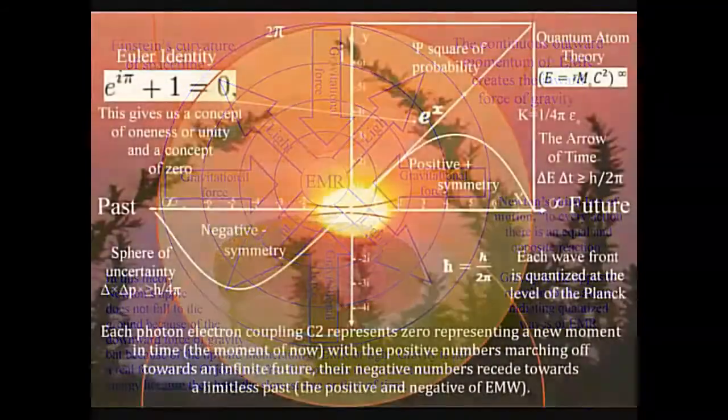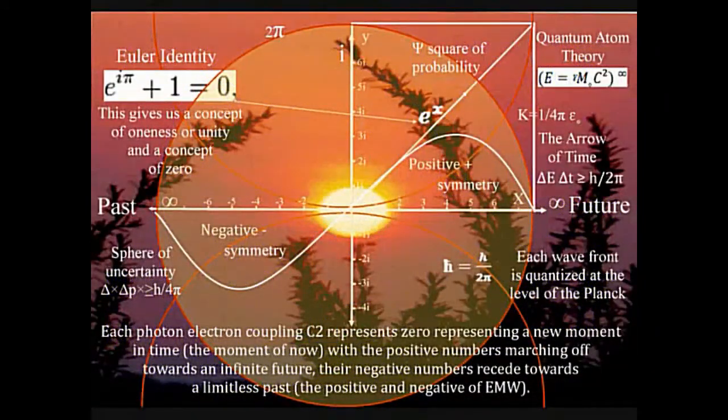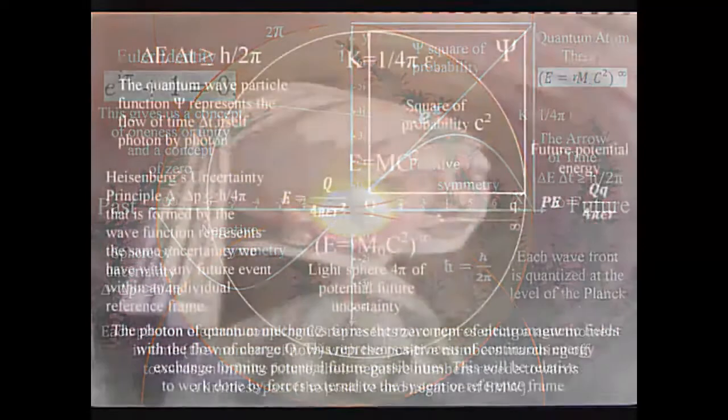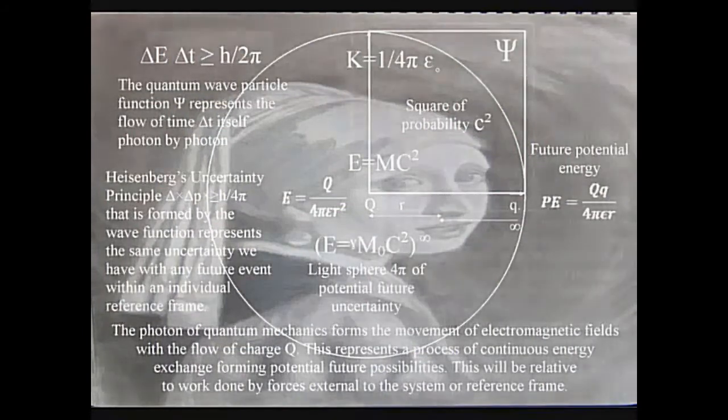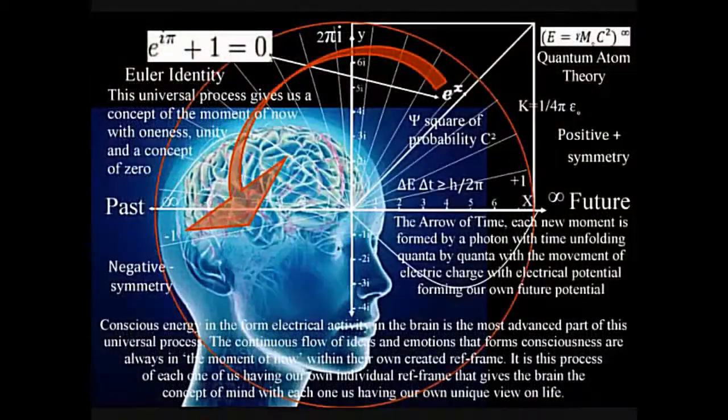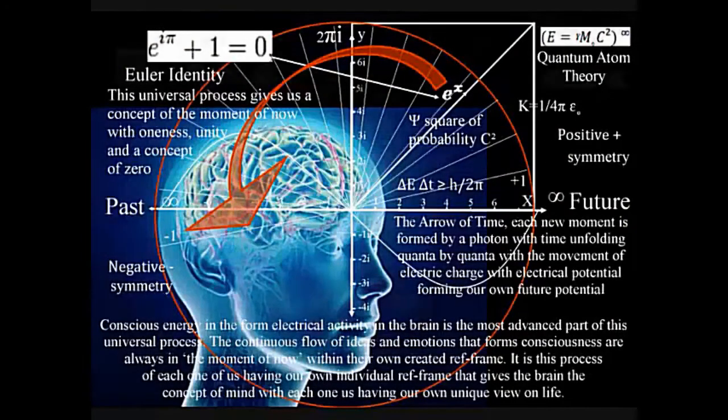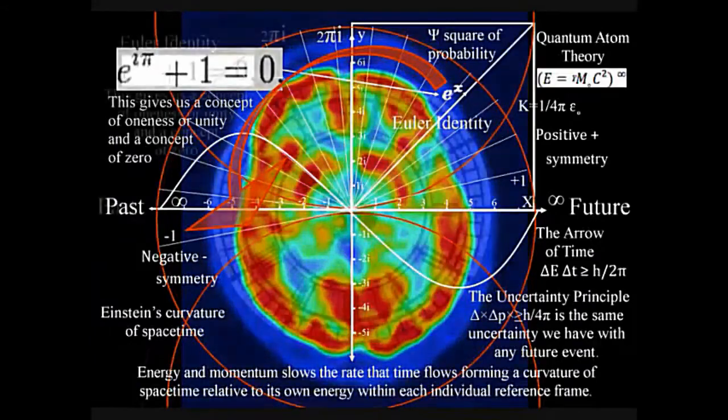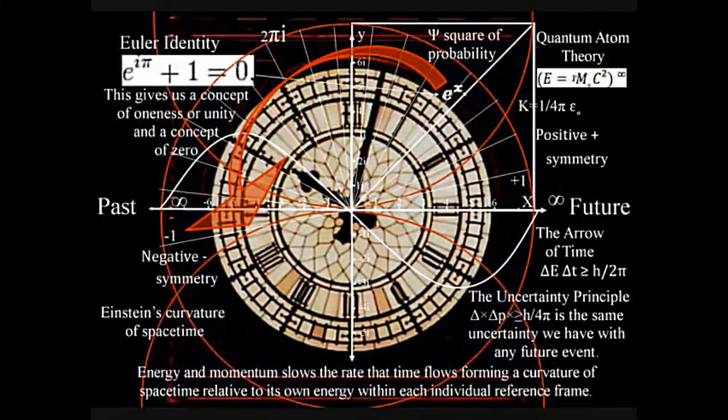The universe is in a process of continuous creation, continuously coming into existence with each new photon oscillation. Because the photon is the carrier of the electromagnetic force, electrical potential is the same potential we have with any future event within our own reference frame. We see and feel this process as the flow of time itself.